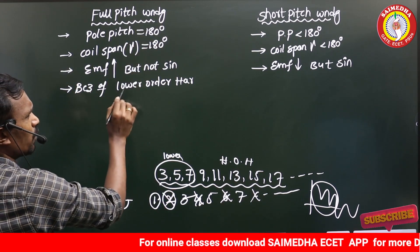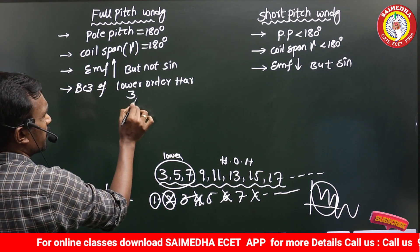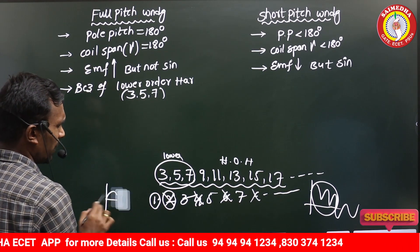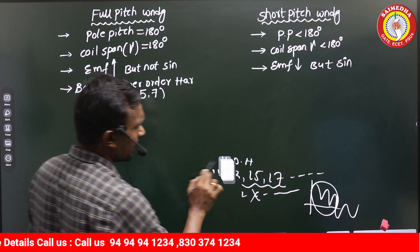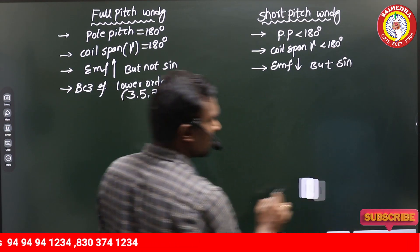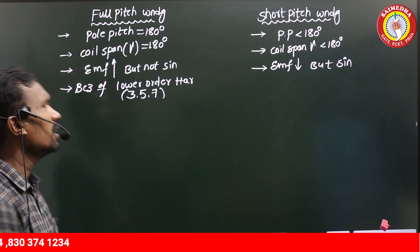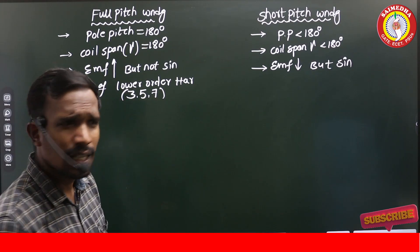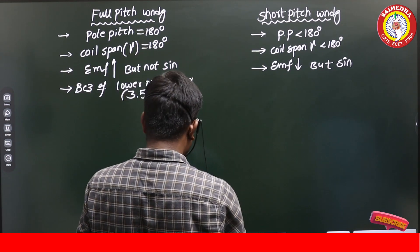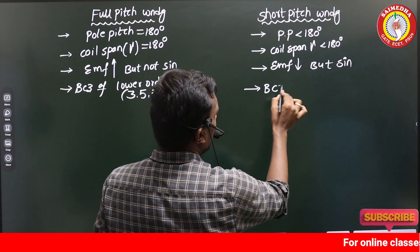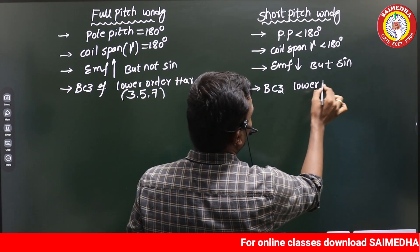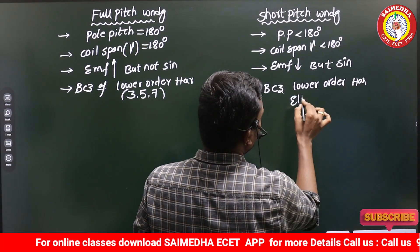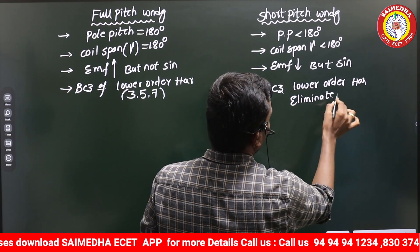The EMF is not sinusoidal in full pitch winding because of lower order harmonics — specifically the third, fifth, and seventh order harmonics. In short pitch winding, the EMF is sinusoidal because these lower order harmonics are eliminated. That is why we get a sinusoidal EMF with short pitch winding.